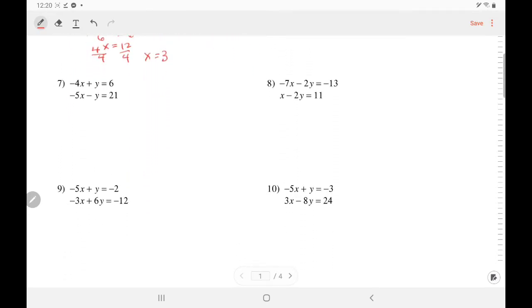In number 7, y isn't isolated. So we isolate it ourselves. It could have been x, but in this case, y is easier to isolate. So we isolate y by adding 4x. And you do it to both sides. So this negative 4x plus 4x canceled out. So y equals 6 plus 4x.